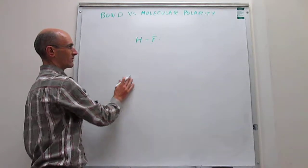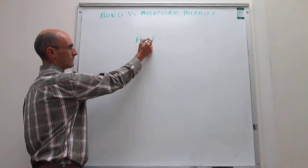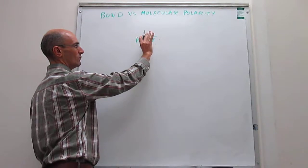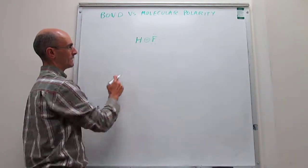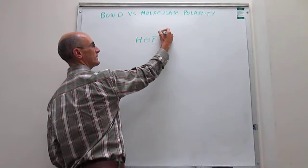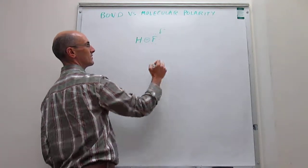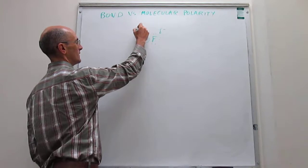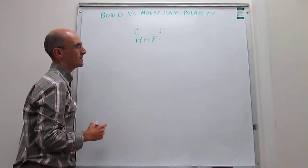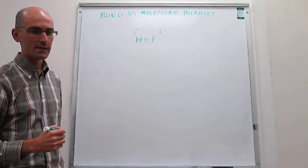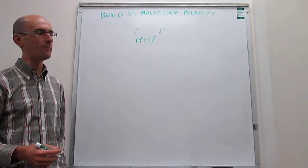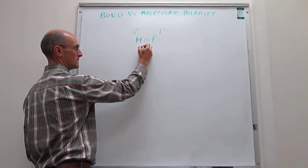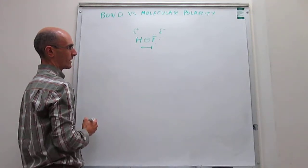Fluorine is the most electronegative atom of the periodic table, which means that the electrons of the bond shared between hydrogen and fluorine will be closer to the fluorine atom than to the hydrogen atom. That generates a slight negative charge on the fluorine atom and a slight positive charge on the hydrogen atom. This molecule is now dipolar — it has a dipole moment — we call it a polar molecule, and there is a dipole moment pointing in this direction.